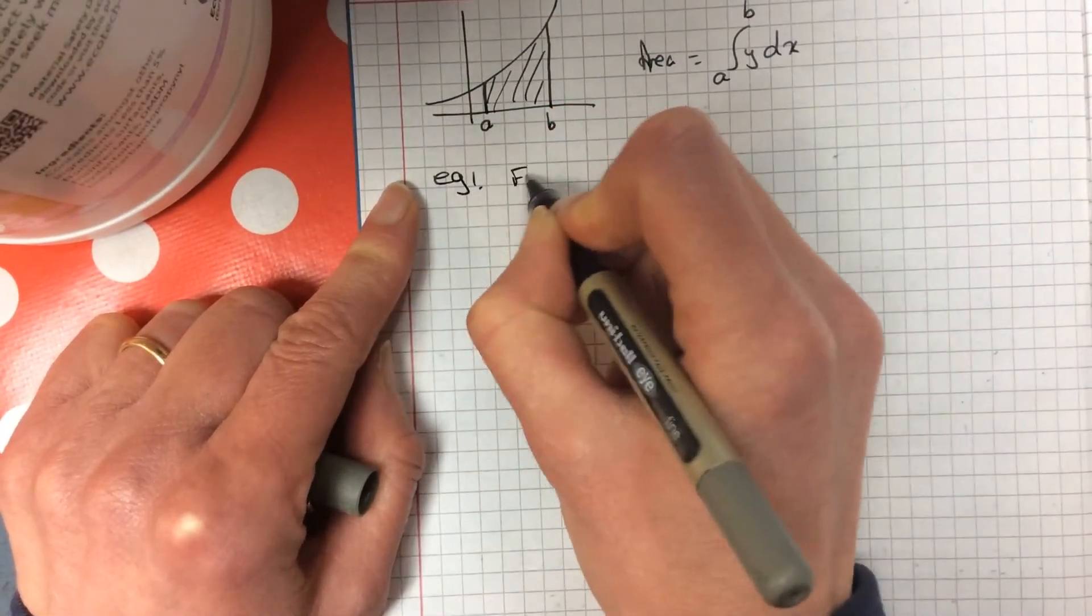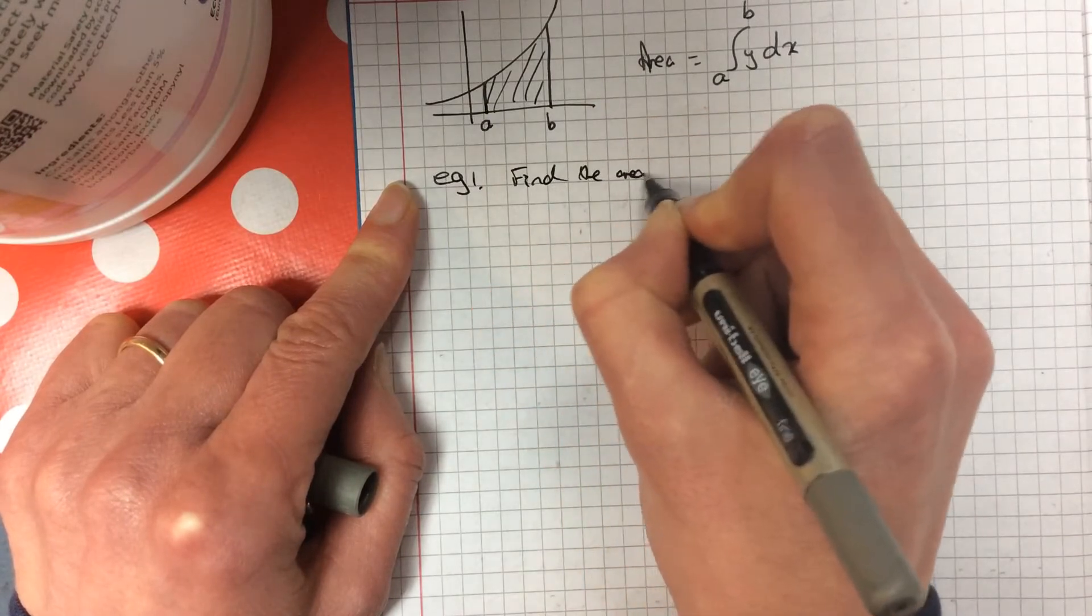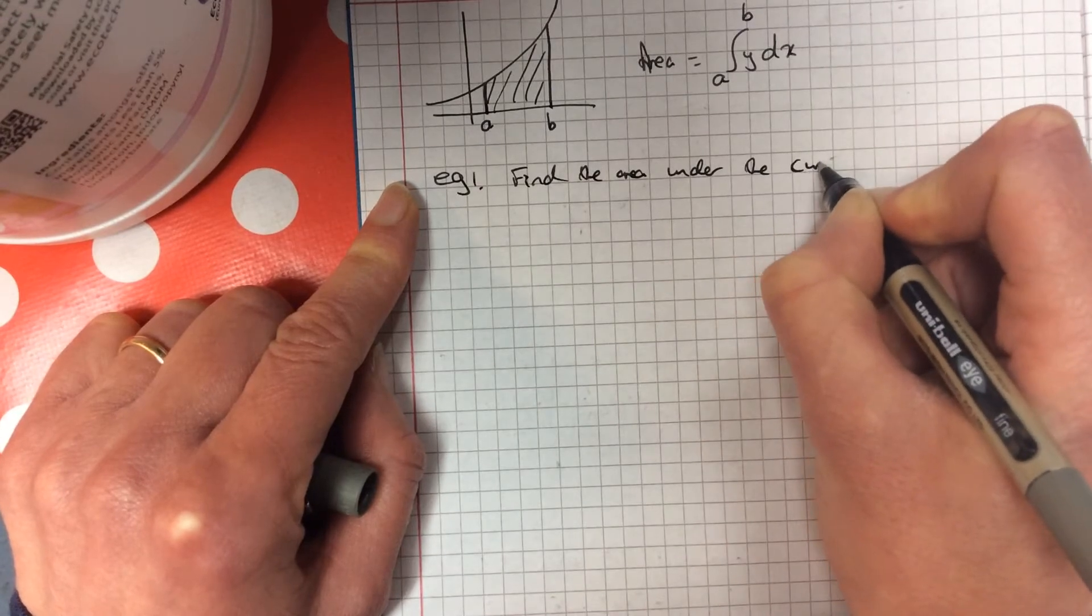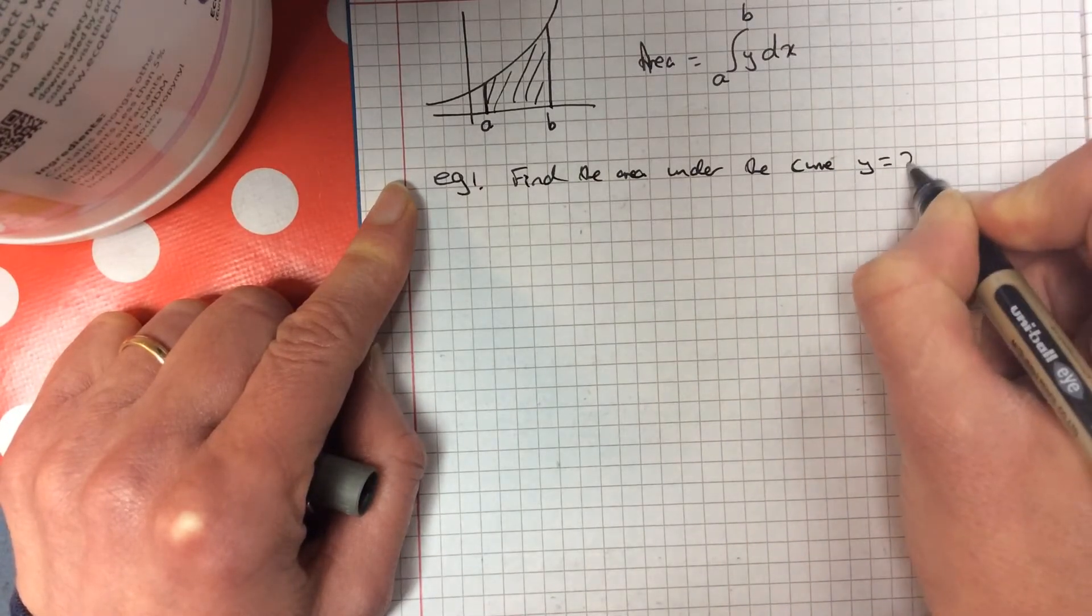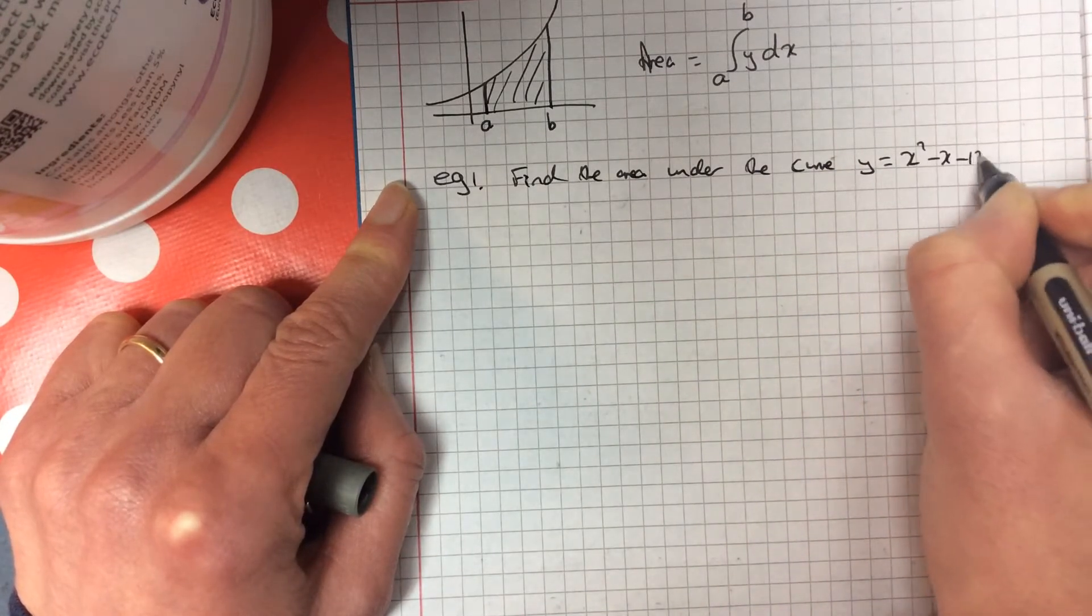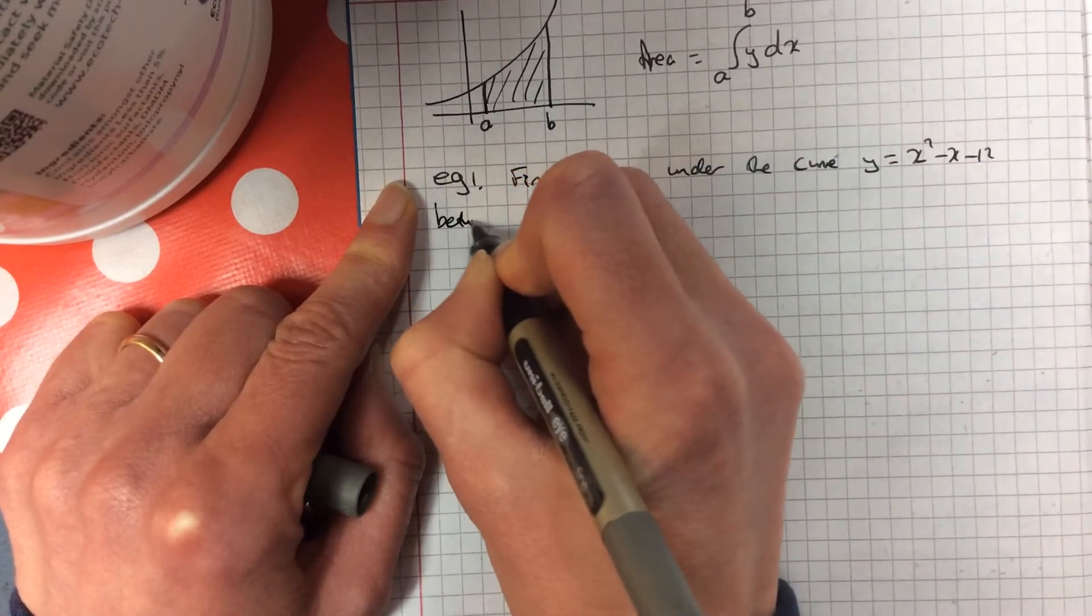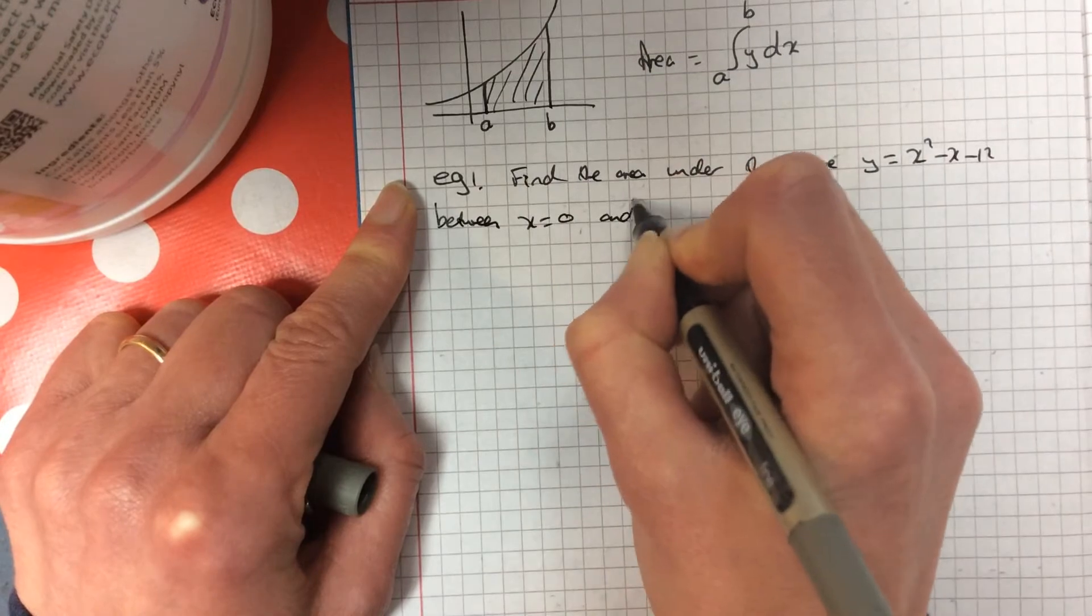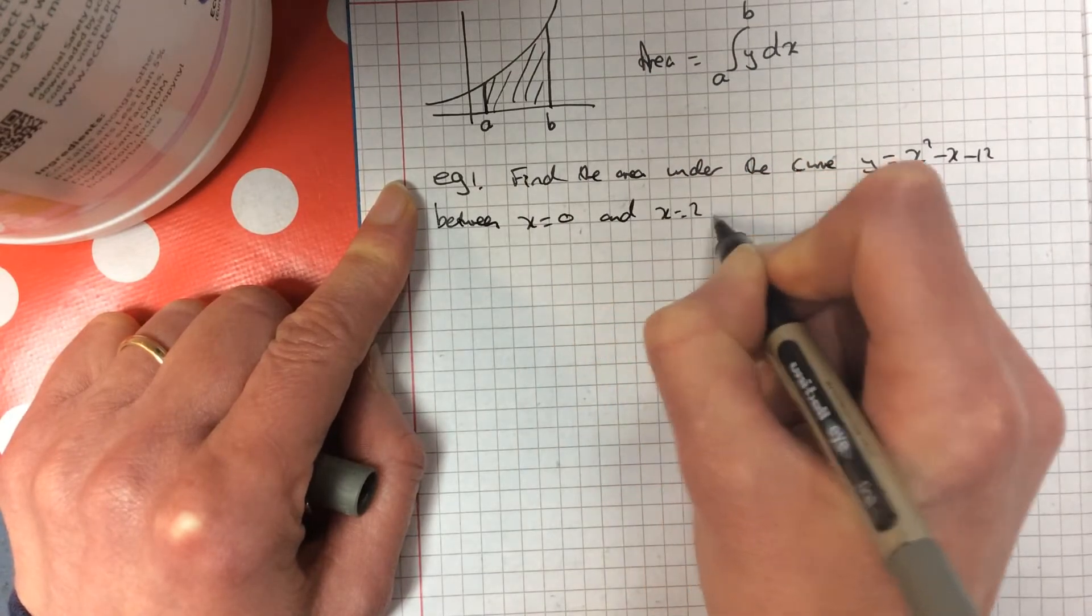So example 1. Find the area under the curve y equals x squared minus x minus 12 between x equals 0 and x equals 2.